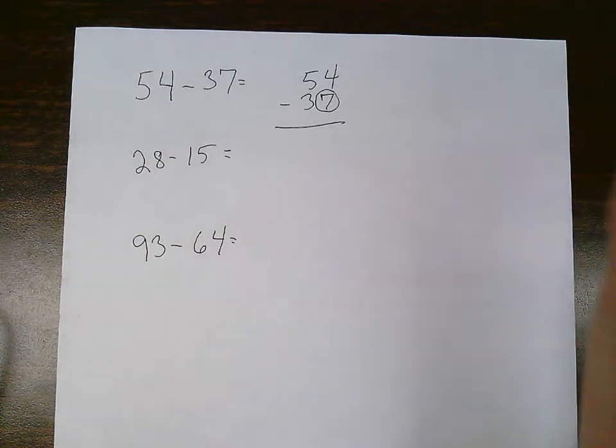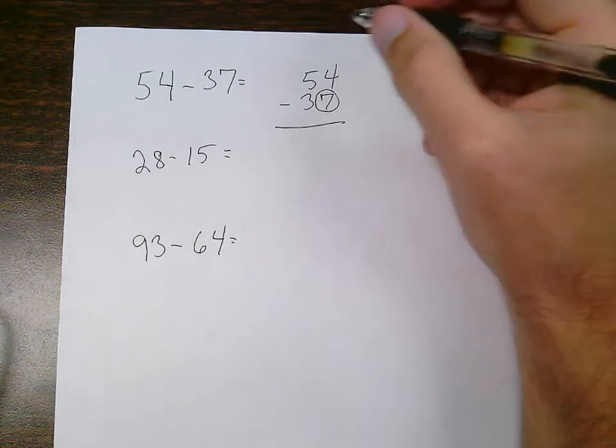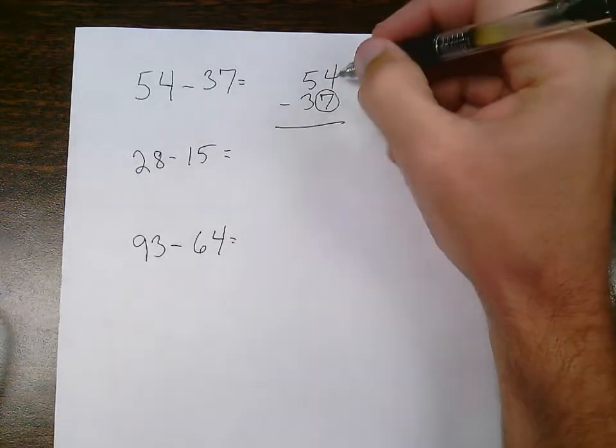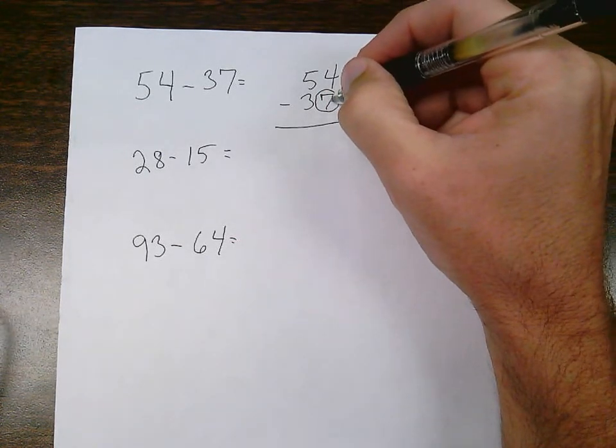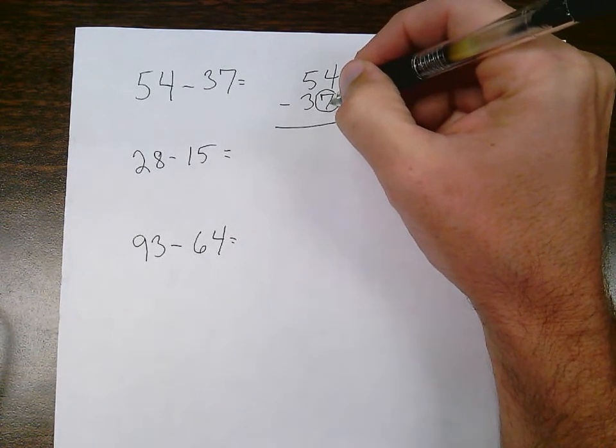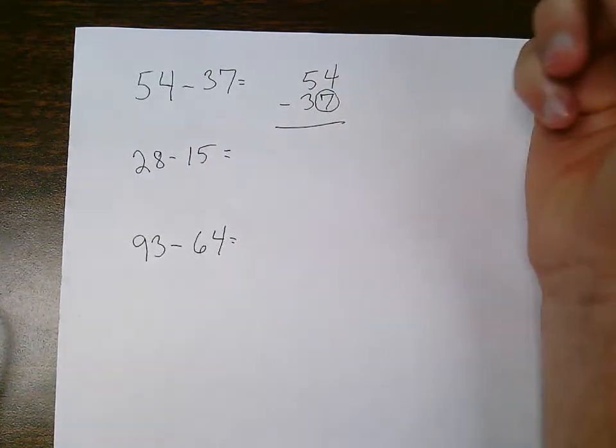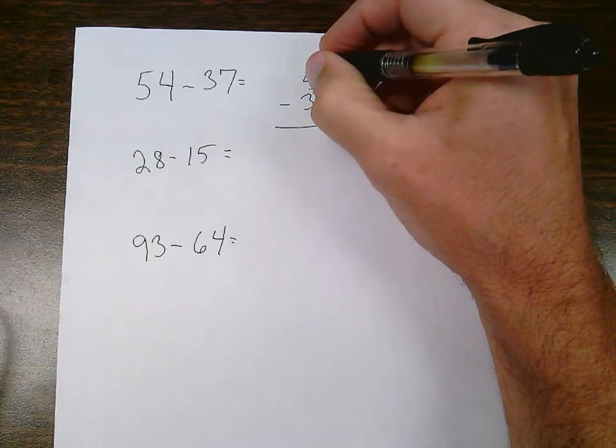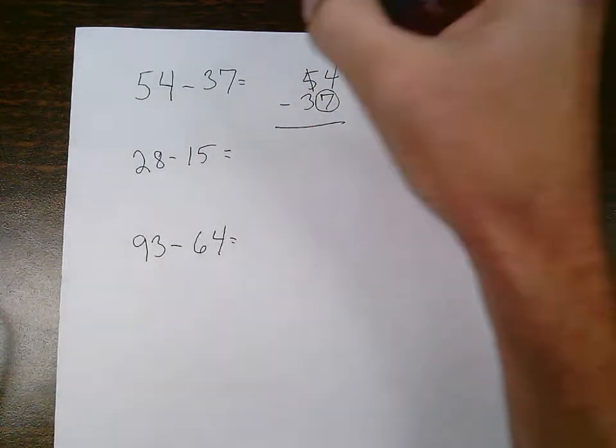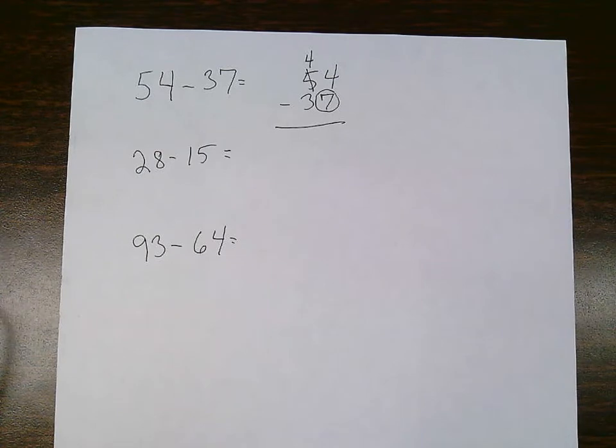So what happens here is I'll have to borrow from my neighbor. So the 4 doesn't have enough cookies to give 7 away. So we go to our neighbor, and we take one package. Cross it off, and the 5 becomes a 4. So we take one package of cookies, and that package of cookies is always worth 10.